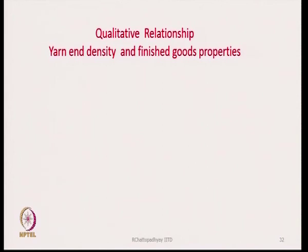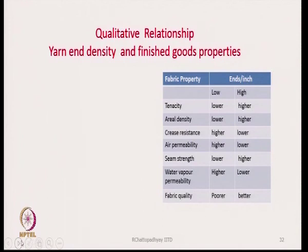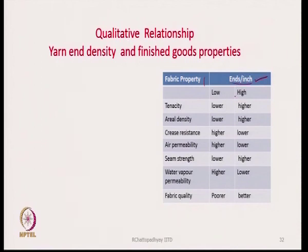A qualitative relationship between yarn end density and fabric properties is shown here. Certain fabric properties — like tenacity, aerial density, and crease resistance — are related to ends per inch. Ends per inch is a fabric constructional parameter. The table shows how ends per inch, at low and high levels, affects these fabric properties: tenacity will be lower if ends per inch is lower, seam strength will be low if ends per inch is lower.